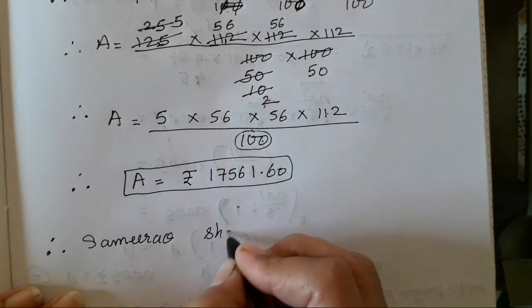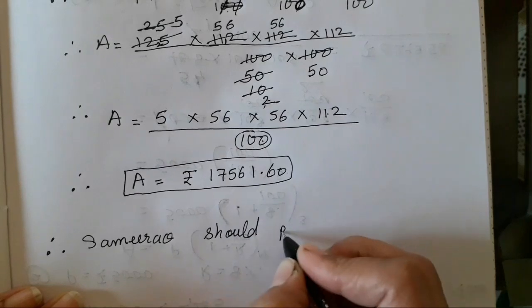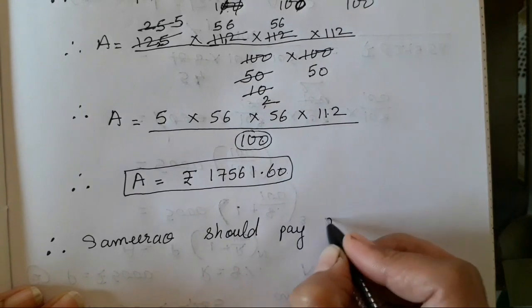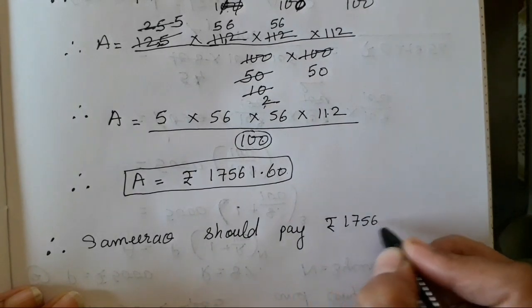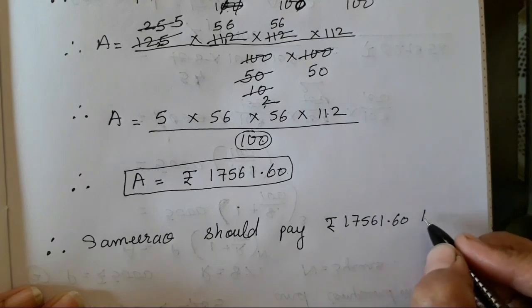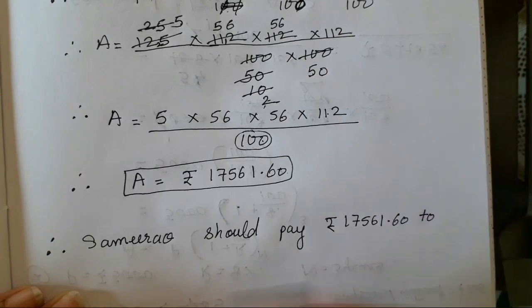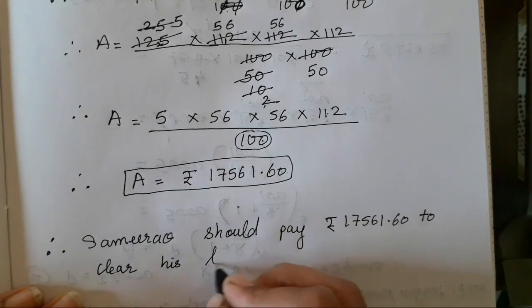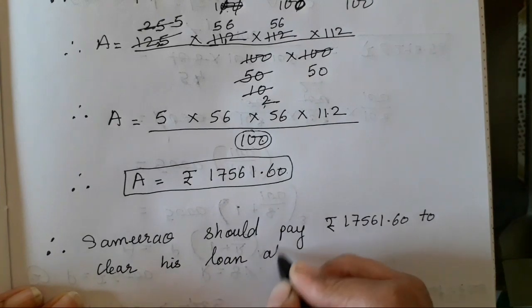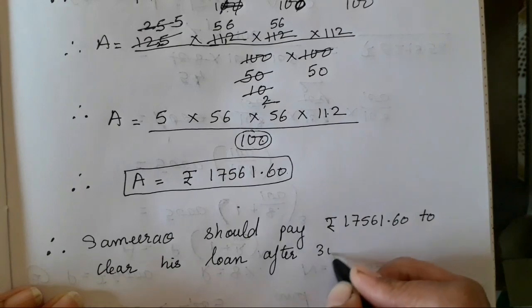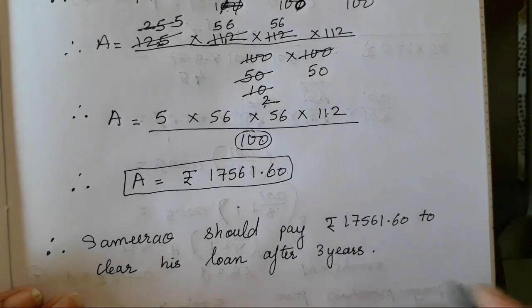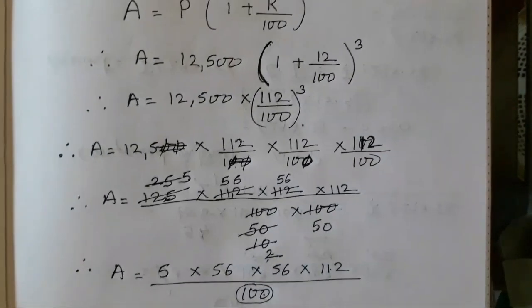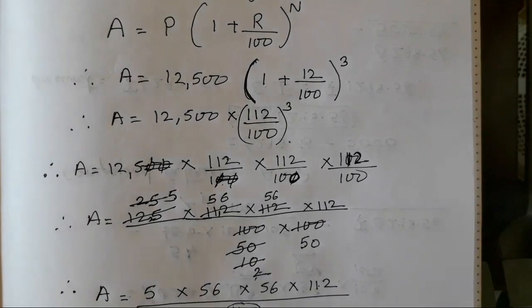Let's write the conclusion. Children, while solving, if you are finding anything difficult, please let me know in the comment section. Shalaka will have to pay ₹17,561.60 to clear his loan after 3 years. I hope this problem sum is very clear. It's same as we did yesterday's sum. Let's do the next sum.